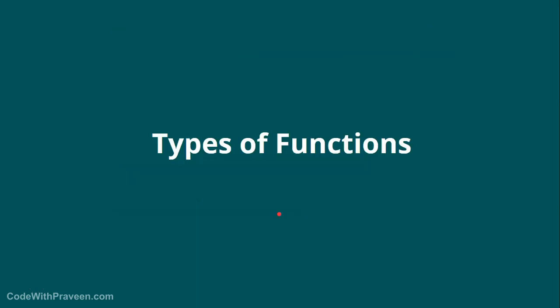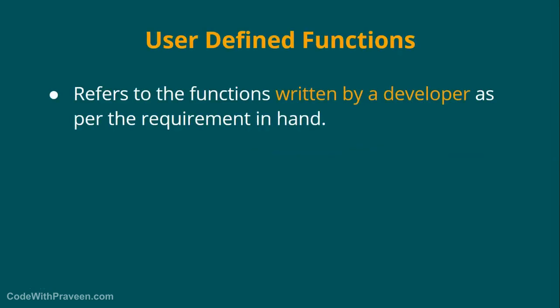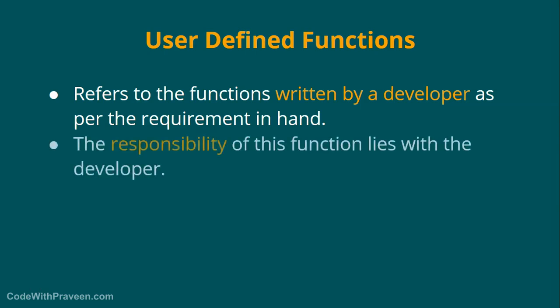In this video we will see the different types of functions generally available in a programming language. Generally we have two types: one is a user-defined function and the other is a standard library function. The user-defined function refers to those functions written by a developer as per the requirement in hand. Whenever you as a developer write any function, that is a user-defined function.